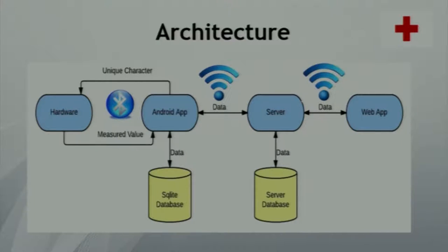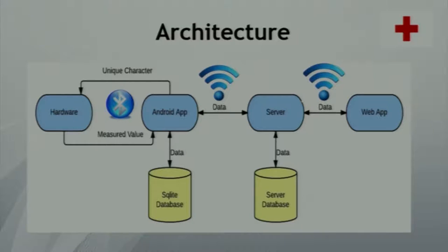Our system consists of three parts: hardware, the Android app, and the web app. When the appropriate tab is clicked on the Android app, the data from the sensors is displayed on the Android app and stored in the local SQLite database. When internet connection becomes available, it is pushed onto the server and stored permanently in the server database. This data can then be viewed by the doctor and the patient using the web app.